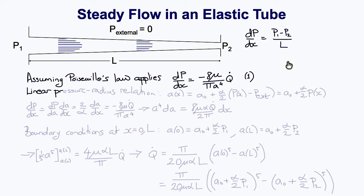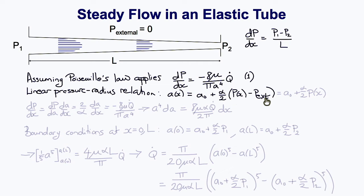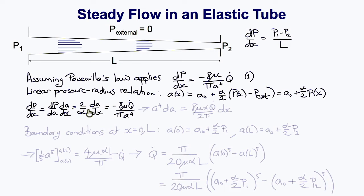Now let's assume that there's a linear relationship between the vessel interior pressure and the radius a. As a function of position along the length x, a equals a-naught (the original unpressurized radius) plus alpha over two (the compliance) times p(x) minus p-external. Assuming external pressure is zero, a equals a-naught plus alpha over two times p(x). From the chain rule, dp/dx equals dp/da times da/dx, where dp/da equals two over alpha. So two over alpha times da/dx equals minus eight mu q over pi a to the fourth, which rearranges to a to the fourth da equals eight mu alpha q-dot over two pi times dx.